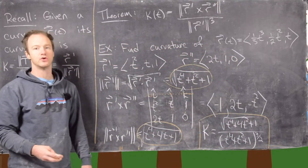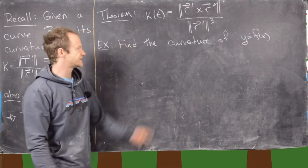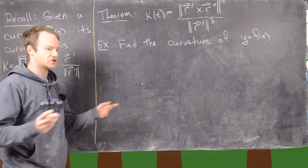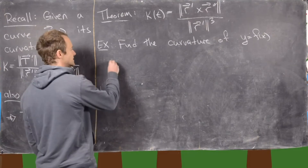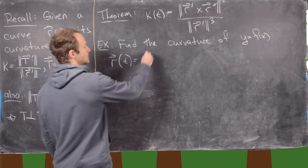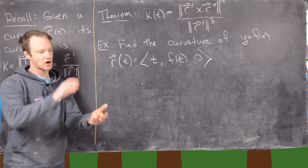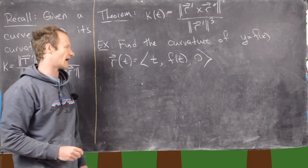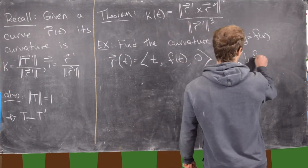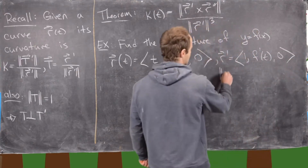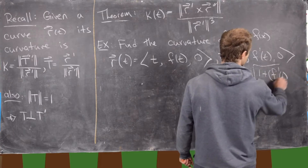Before the end of the video, we apply this formula to find the curvature of a plane curve y = f(x). We parametrize the curve by letting r(t) = (t, f(t), 0), so the curve lives in three-dimensional space on the xy-plane. From here, r' = (1, f'(t), 0), and the magnitude of r' is the square root of 1 + (f'(t))².